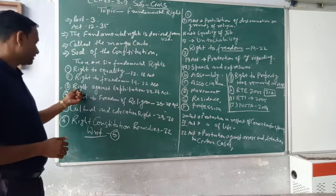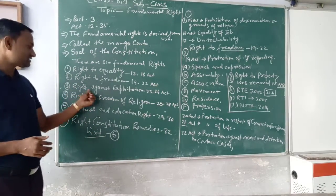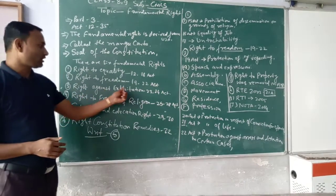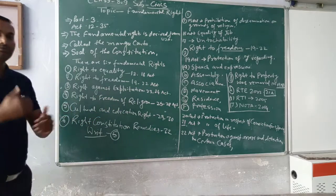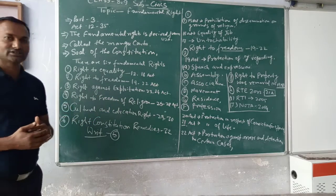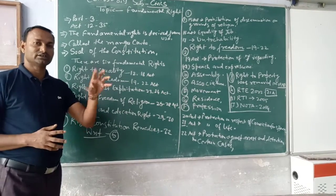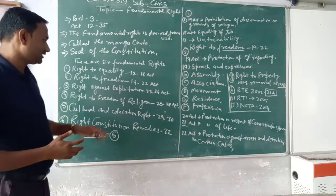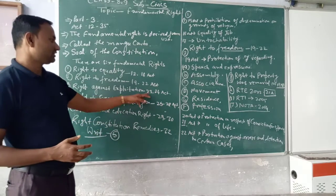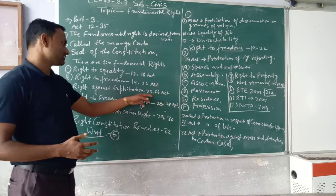The third right is the Right Against Exploitation — Shoshan Ke Viruddh Adhikar. No one can exploit or oppress anyone. You cannot force labour on someone, and you cannot suppress anyone. This is covered in Articles 23 to 24.